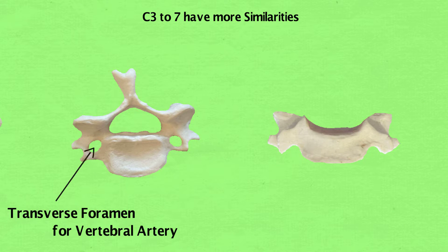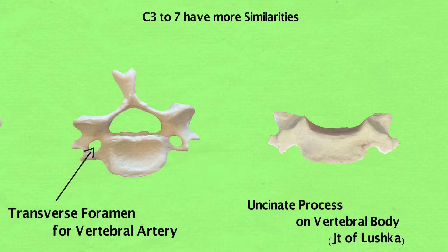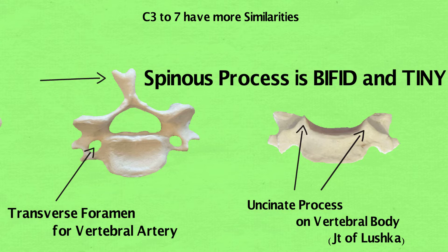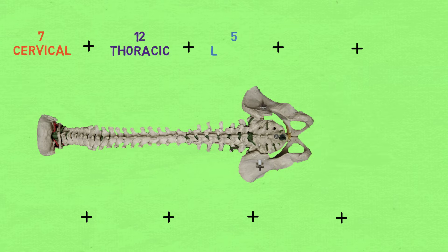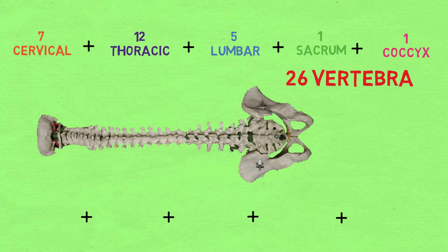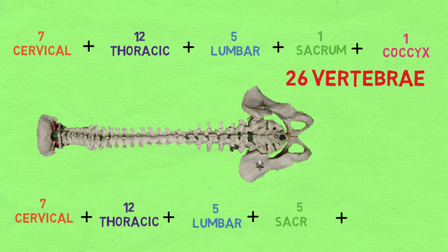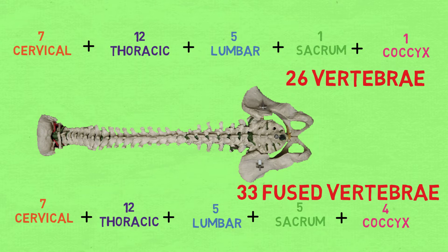C3 to 7 have more similarities: transverse foramen for the vertebral artery, uncinate process on the vertebral body, and the spinous process is bifid and tiny.